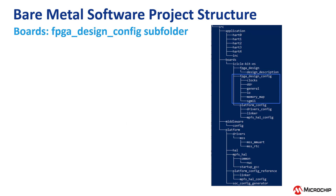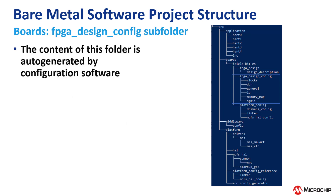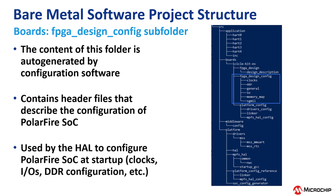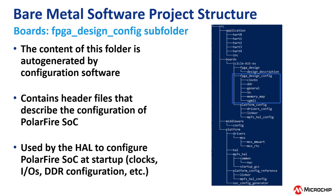The contents of the FPGA Design Config folder is auto-generated by the configuration software. It contains the header files that are described in the configuration of the PolarFire SOC MSS, and it is used by the hardware to configure PolarFire SOC at startup — for example, the clocks, the IOs, the DDR configuration, etc.